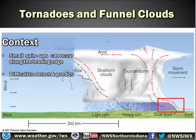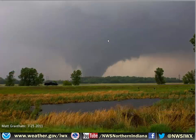Sometimes small spin-ups can occur along the leading edge of strong thunderstorms — the multi-cells like the squall lines and bow echoes. These are generally difficult to detect and predict, and they won't have the classic features of a wall cloud, and they're very short-lived. So you may sometimes see them there as well, but they won't look as clearly defined.